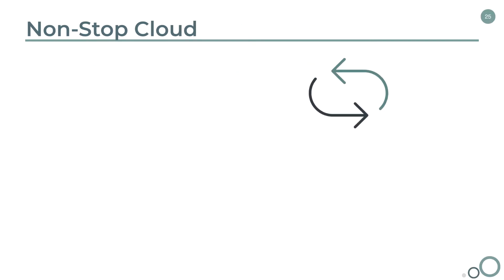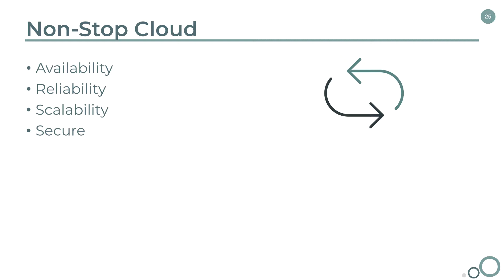The non-stop cloud represents availability, reliability, scalability, and security. ServiceNow states the non-stop cloud is always on — no customer instance is ever offline or taken down for any reason. A unique multi-instance architecture ensures each customer can fully customize cloud services and perform upgrades on their own schedule. Highly secure, the non-stop cloud conforms to the highest levels of compliance and global regulations, and an industry-leading high-availability infrastructure ensures instance redundancy between two data center clusters in every geography, scaling to meet the needs of the largest global enterprises.